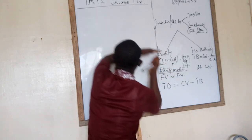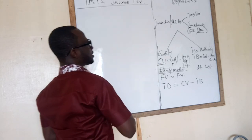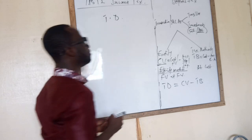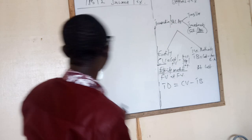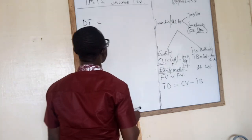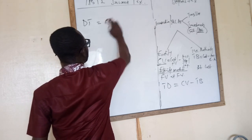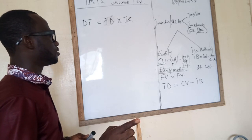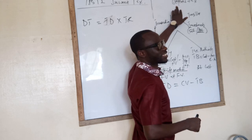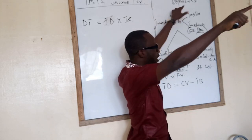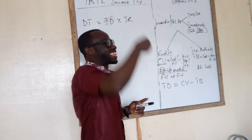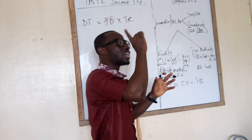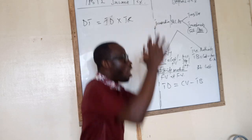It is this temporary difference that leads us into what we call deferred tax. Deferred tax is simply the temporary difference (TD) times the tax rate (TR). When we use the word 'deferred,' it means we are putting something in the future — we are finding out the tax implication of a certain transaction today and recognizing it today, even though the tax implication will actually not affect us today. More or less, we are providing for it today.